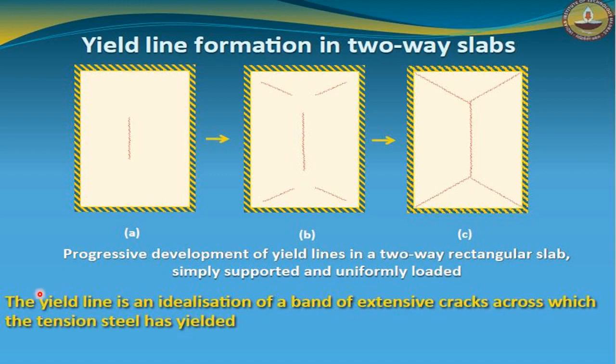Other way we can define the yield line, this yield line is an idealization of the band of extensive cracks, across which the tension steel has yielded.